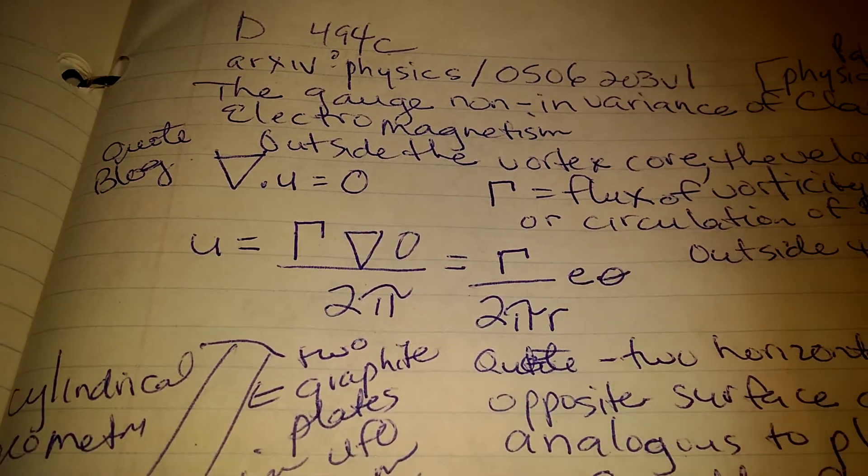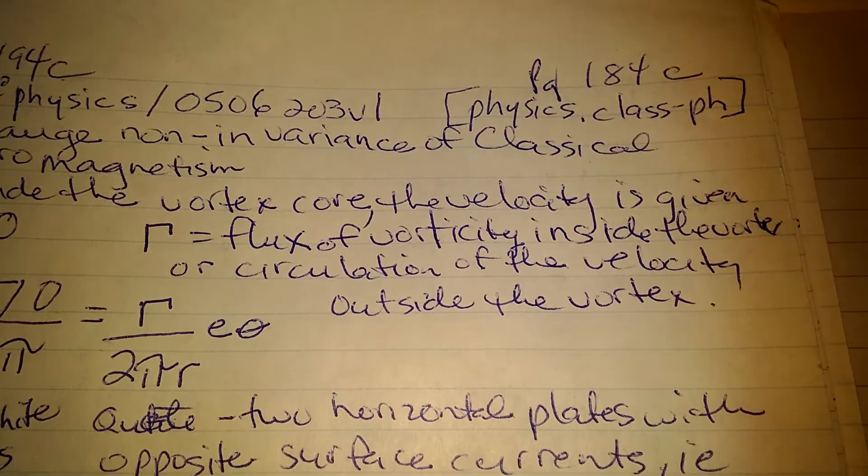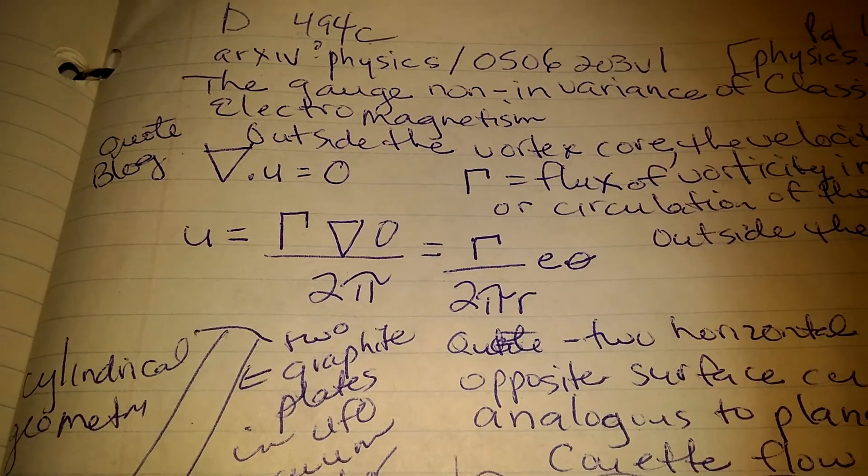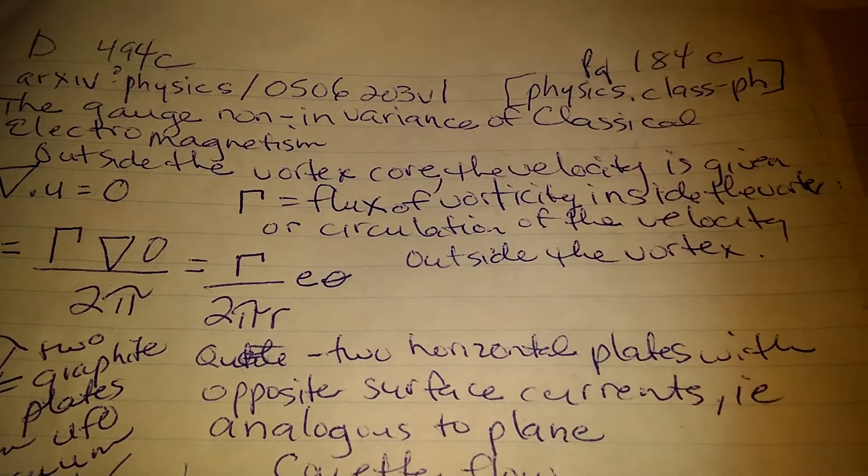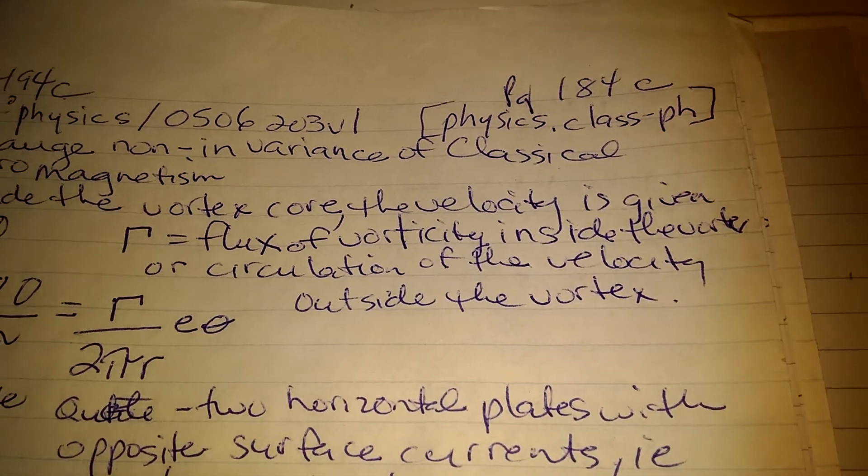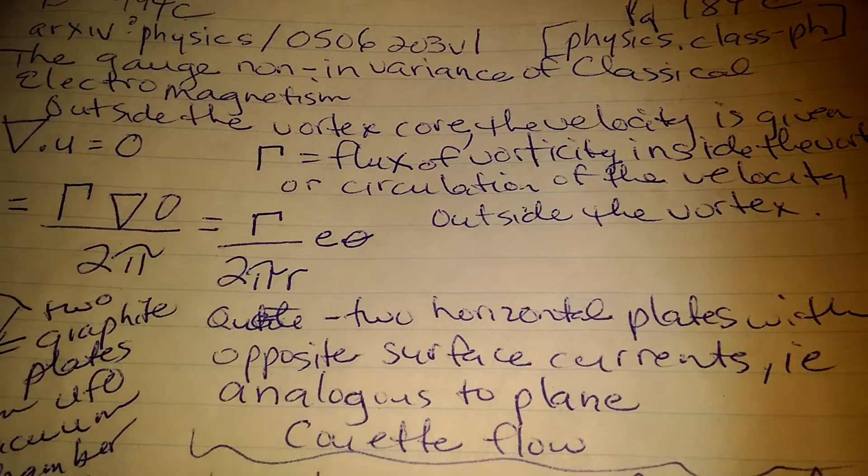Quote from the blog, outside the vortex core, the velocity is given. There's the equation. There, r equals the flux of vortices inside the vortex or circulation of the velocity outside of the vortex.